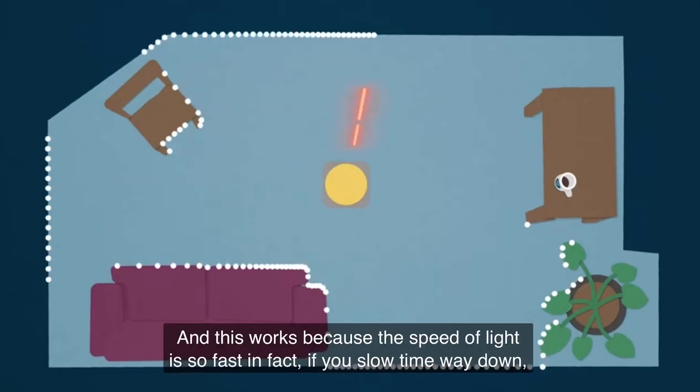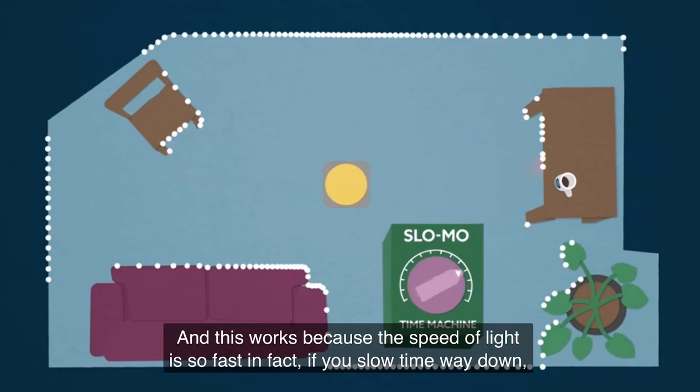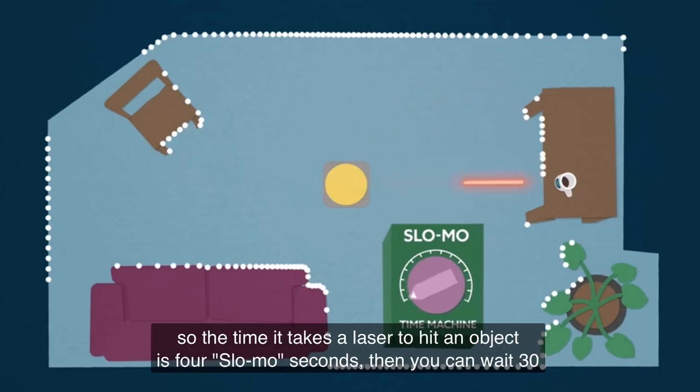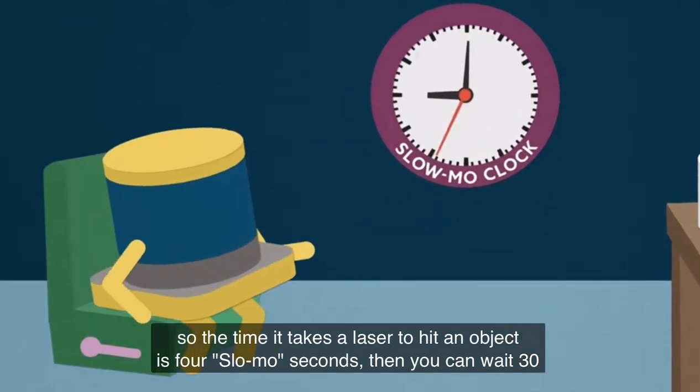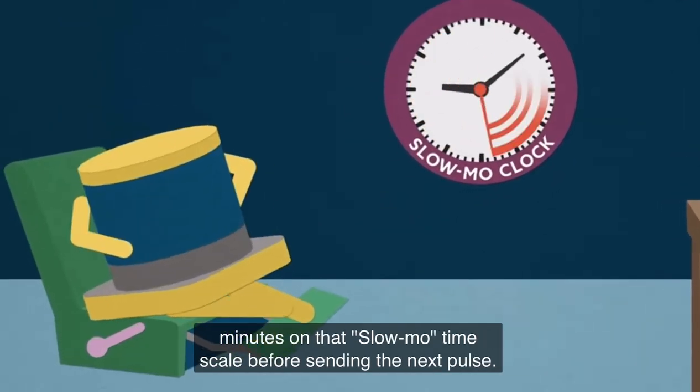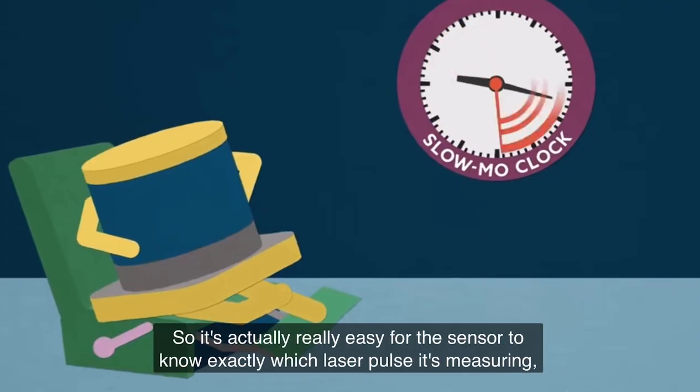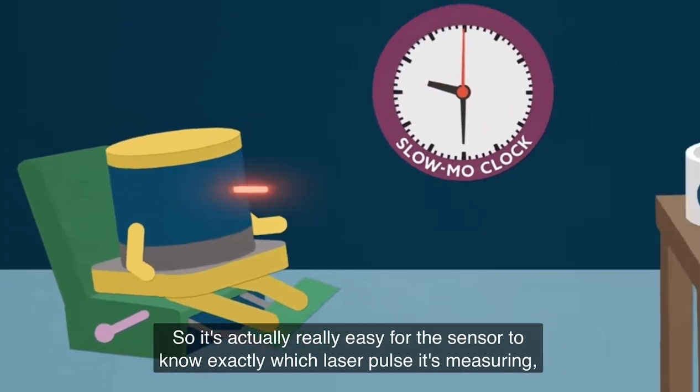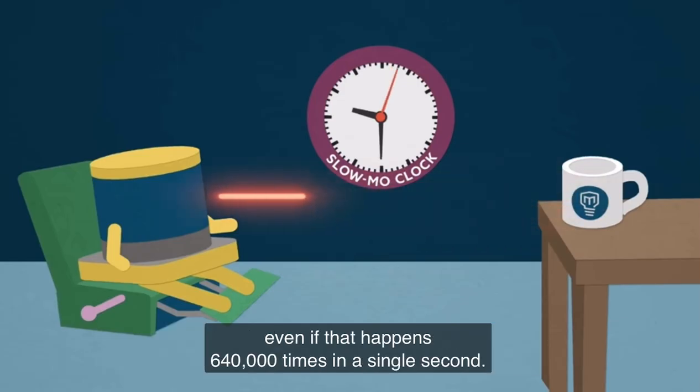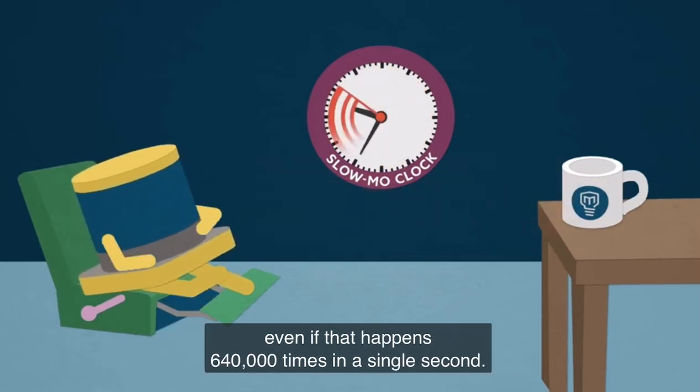And this works because the speed of light is so fast. In fact, if you slow time way down, so the time it takes a laser to hit an object is four slow-mo seconds, then you can wait 30 minutes on that slow-mo time scale before sending the next pulse. So it's actually really easy for the sensor to know exactly which laser pulse it's measuring, even if that happens 640,000 times in a single second.